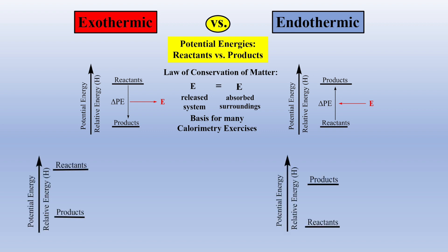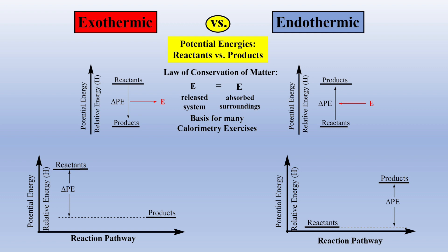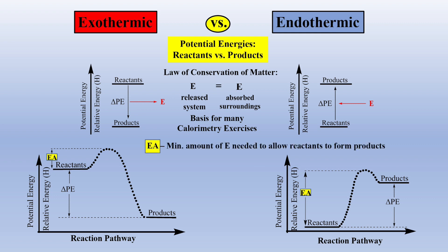However, an even better way to envision exo- and endothermic reactions is to include an ambiguous reaction pathway on the x-axis. When we include the reaction pathway, we can include an energy of activation barrier, which is the minimum amount of energy needed to allow the reactants to form products. This representation also allows us to label the transition state, or the activated complex, which is at the apex of this reaction pathway.